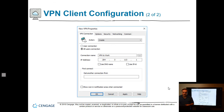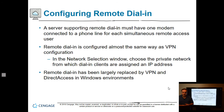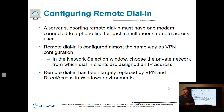A server supporting remote dial-in must have one modem connected to a phone line. Remote dial-in is configured almost the same way as VPN: select the private network, specify the phone number to dial in, and you need a modem on both the client computer and the server. While most people don't use dial-in anymore, you still need to understand how the technology works.